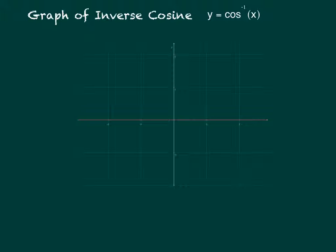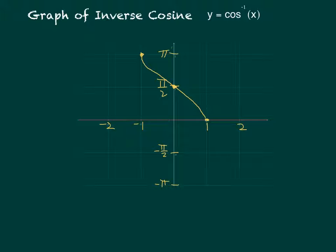The inverse cosine function graph has a similar x-axis numbering: 1, 2, negative 1, negative 2. On the vertical axis, label negative pi over 2, pi over 2, and pi, since the range is 0 to pi. At x equals negative 1, the inverse cosine gives pi; at x equals 1, it gives 0; at x equals 0, it gives pi over 2. The graph is a curved line — not straight — from (negative 1, pi) down to (1, 0).